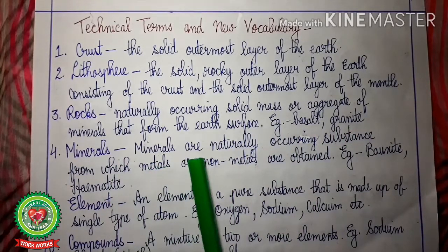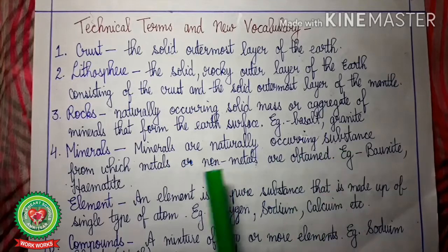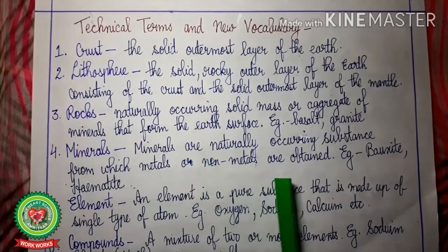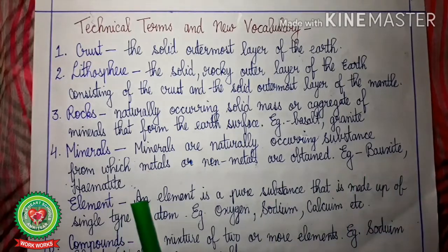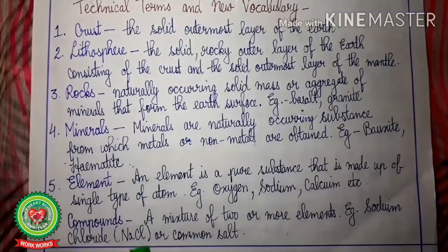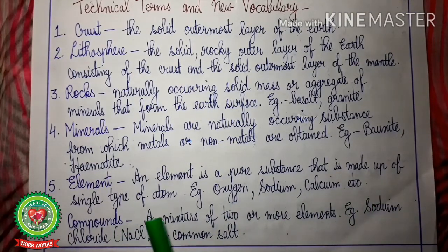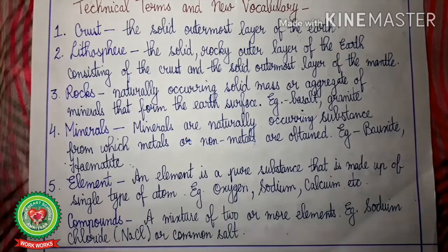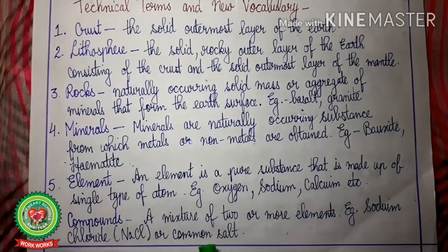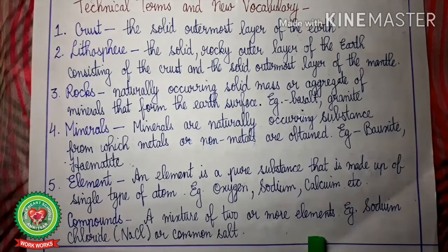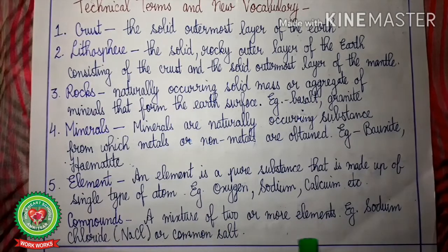Minerals are naturally occurring substances from which metals or non-metals are extracted. Examples: Bauxite, Hematite. 4. Element — an element is a pure substance that is made up of a single type of atom. Examples: Oxygen, Sodium, Calcium. Compounds — a mixture of two or more elements is called a compound. Example: Sodium Chloride, which is also called common salt.